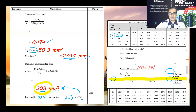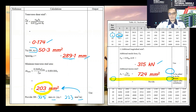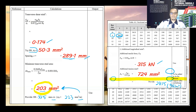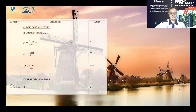The additional longitudinal force is equal to 315 kilo-Newton and the additional tension reinforcement required is equal to 724 millimeter square. We can provide 2H25, which gives approximately 982 millimeter square.